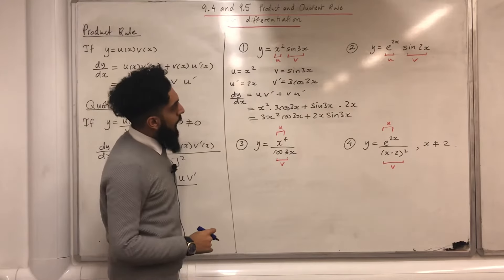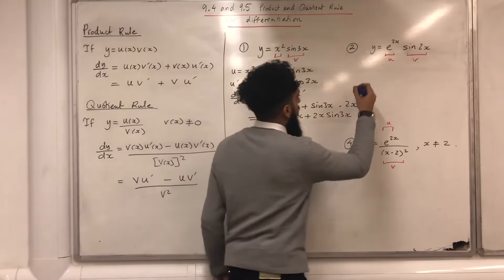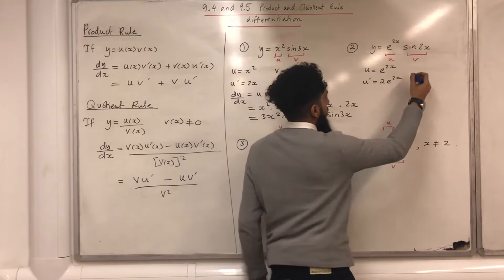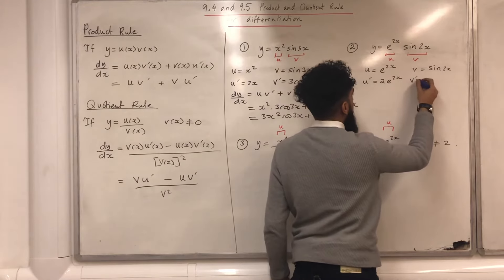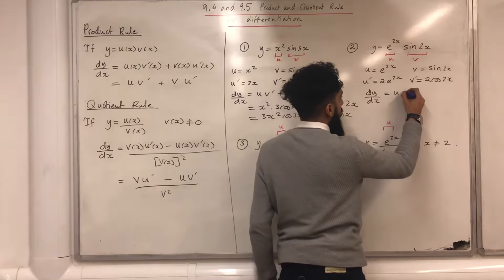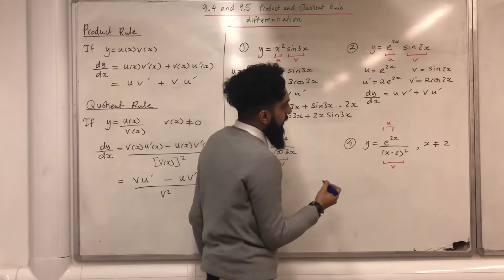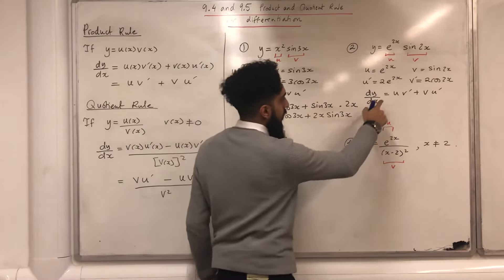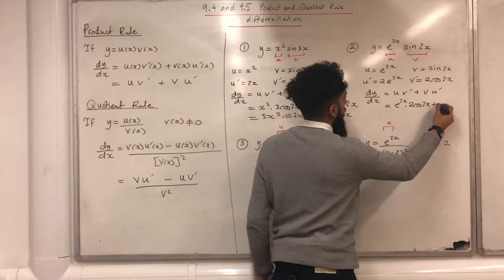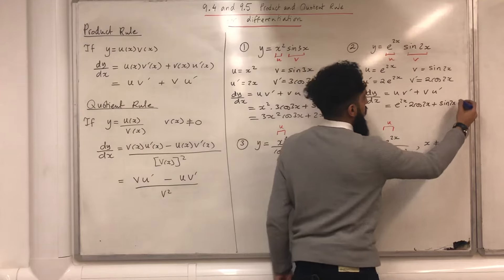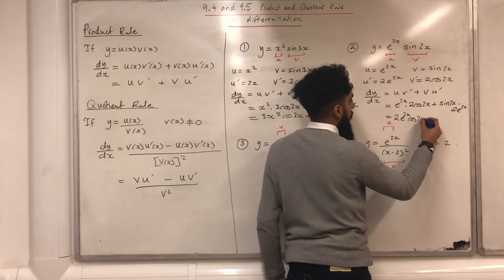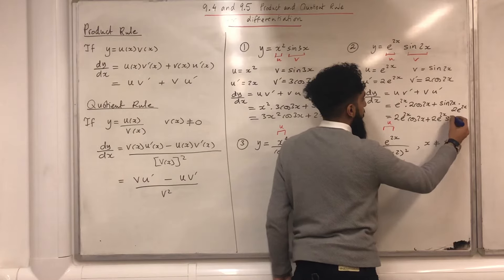Question number two: y equals e to the power 2x multiplied by sin 2x. u = e^(2x), so u' = 2e^(2x). v = sin 2x, so v' = 2cos 2x. Using the product rule, dy/dx = u·v' + v·u' = e^(2x)·2cos 2x + sin 2x·2e^(2x), which can be rewritten as 2e^(2x)cos 2x + 2e^(2x)sin 2x.